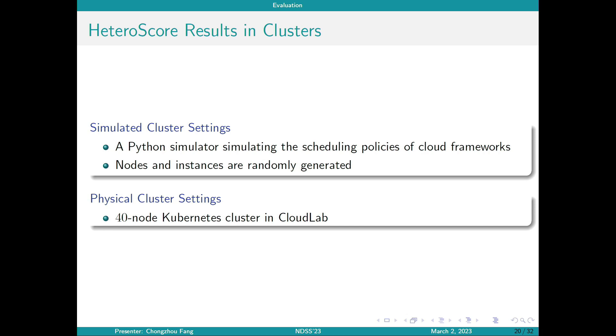Then we present the results obtained from clusters. First, we utilize a Python simulator we used in our RepTech paper last year, which is a simulator mimicking the scheduling policies of popular cloud frameworks like OpenStack and Kubernetes. Here, nodes are randomly generated as well. Then we deploy our experiments in a 40-node Kubernetes cluster set up in Cloud Lab.